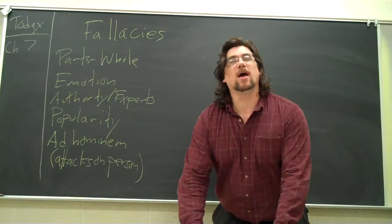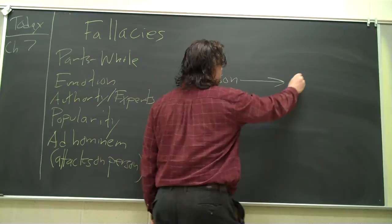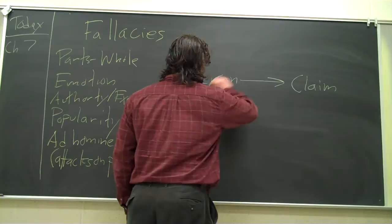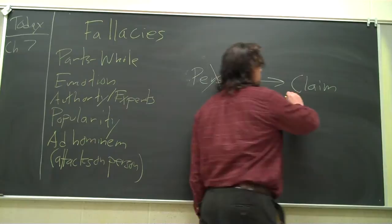And we call it a personal attack because you're actually saying something about the person. And if you think about the structure of the ad hominem, what you have is the person. And the person is making a claim. And instead of engaging the claim directly, instead of attacking the claim, which might be weak, you attack the person. And if you can discredit the person, then what happens to the claim? Discredits also. That's the way our minds work, right?